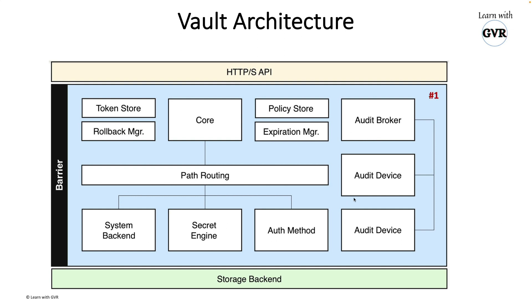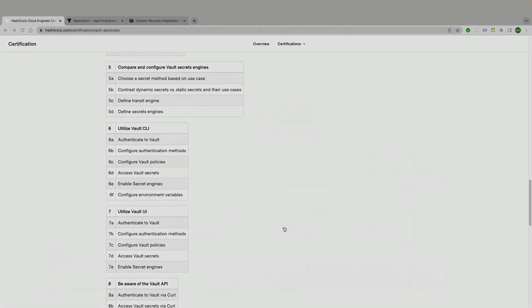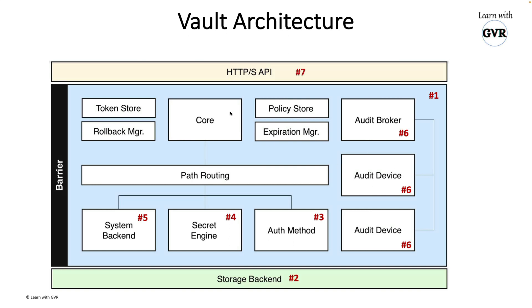There will be a barrier, which is a core barrier. The second is a storage backend which is loosely coupled — you can choose a number of storage options. There is an authentication method, which is one of the major components where you can connect with various auth methods. Vault offers a variety of secret engines and has a system backend. There is also an audit broker and audit device. And Vault will expose a REST API, which is a secured HTTPS API.